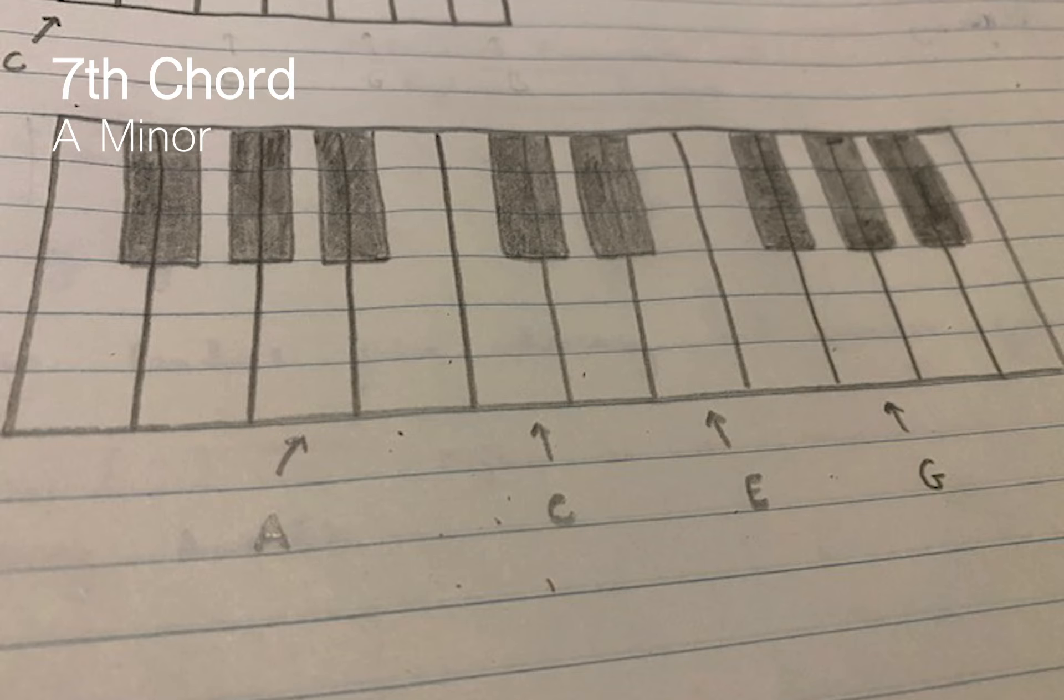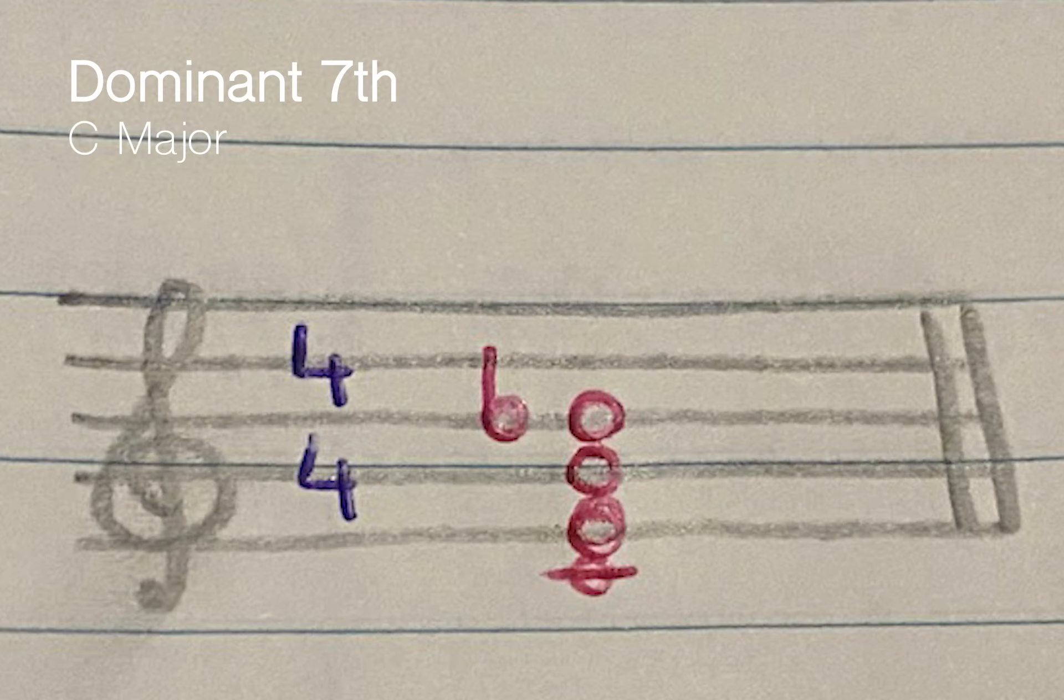Then we move on to dominant seventh chords. Now the dominant seventh chord, what happens simply is that that seventh note goes a step down, becomes flattened. So if we go back to our C major key, we would have C, E, and G, the tonic triad again, add in our seventh note which is B, but then we add a flat to B. And that would be the dominant seventh chord of C major.